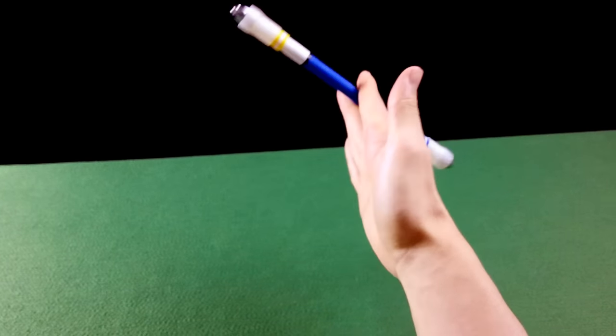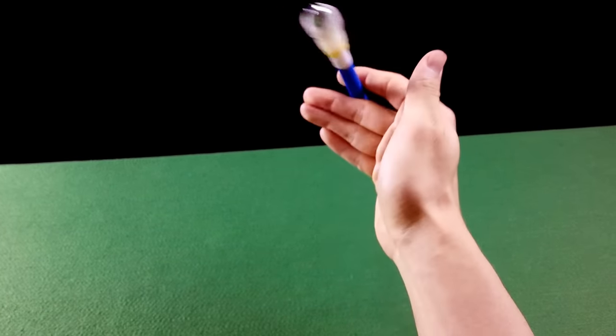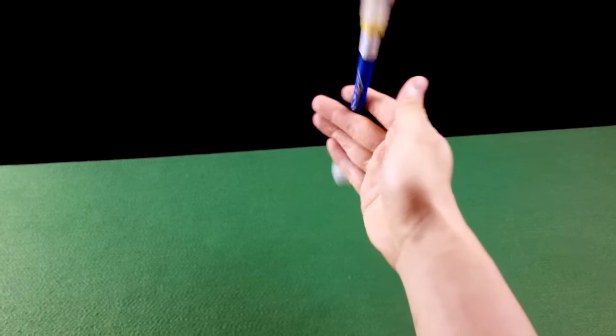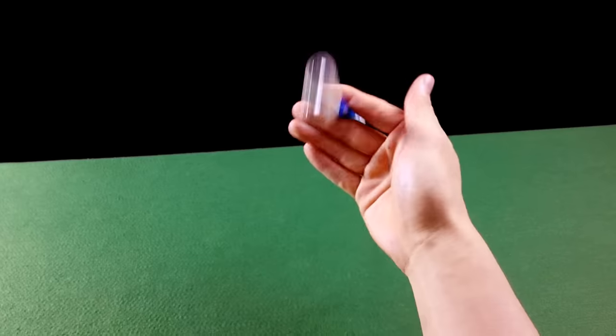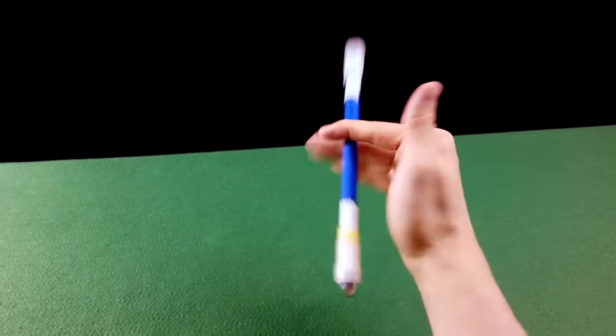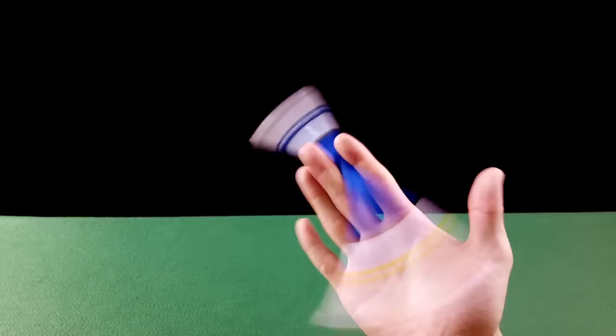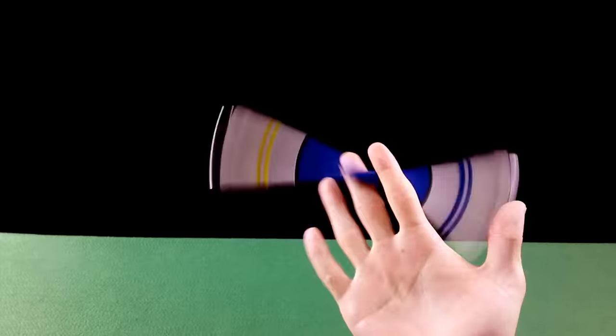Você pode fazer devagar, slow motion, para ter um maior controle até a sua memória muscular pegar o jeito. Aí quando você pegar o jeito do movimento, você vai fazendo mais e mais rápido, várias vezes. E uma hora você está pegando o Charge, o Charge está bonito e perfeito.